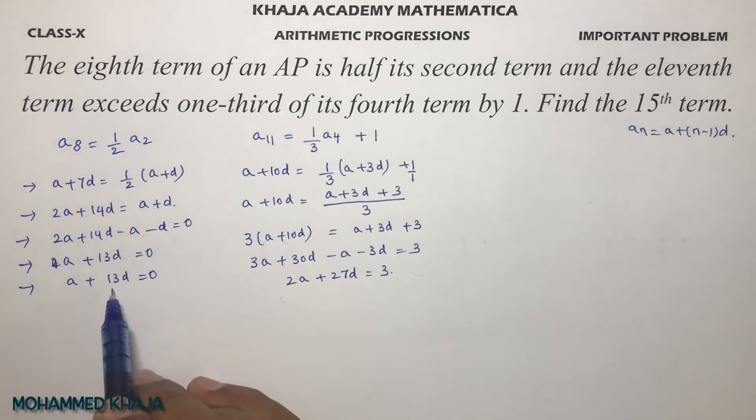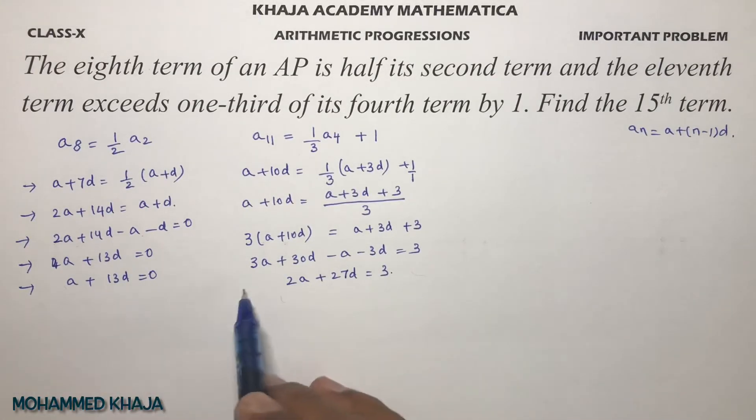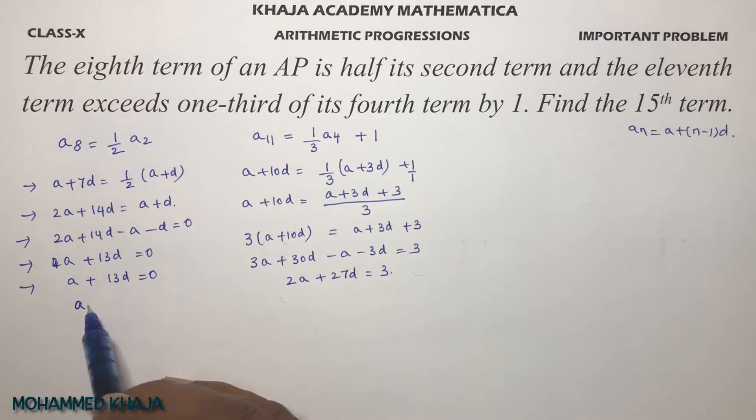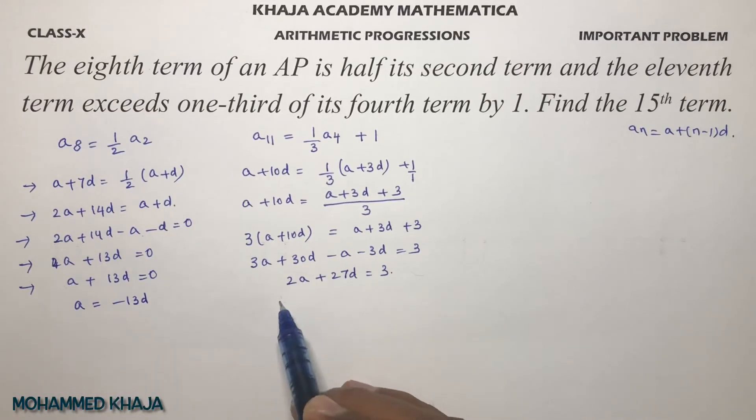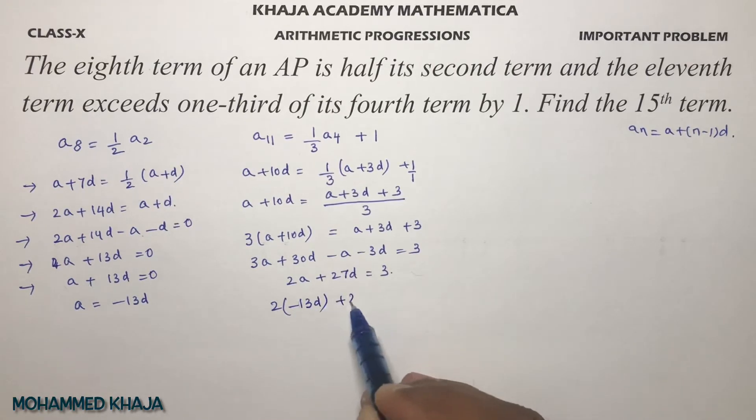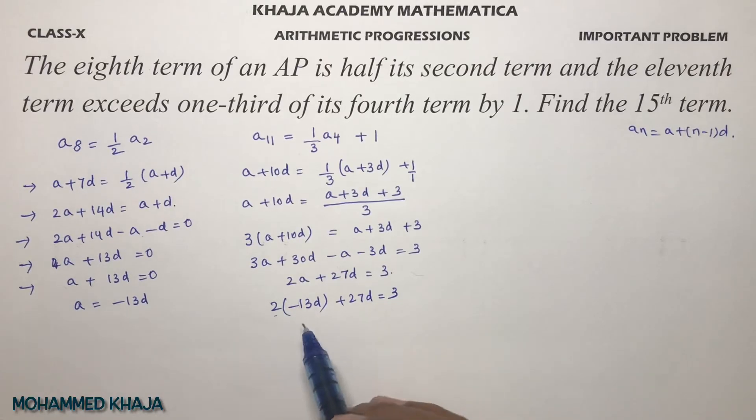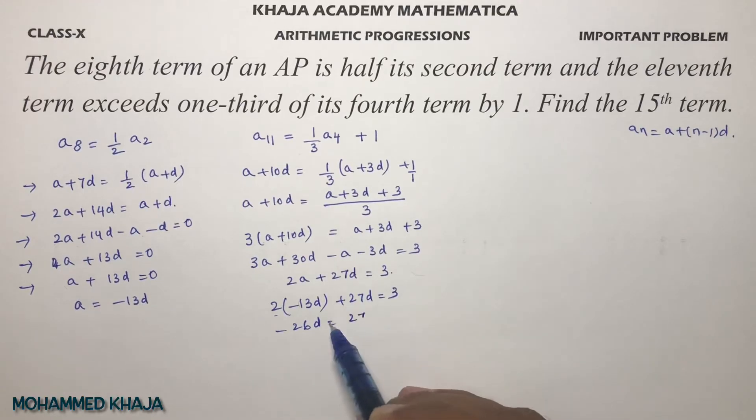Now we can eliminate these two equations. Take the value from the first equation: a equals minus 13d. Substitute this here: 2 times a, which is 2 times minus 13d, plus 27d equals 3. So minus 26d plus 27d equals 3, giving d equals 3.